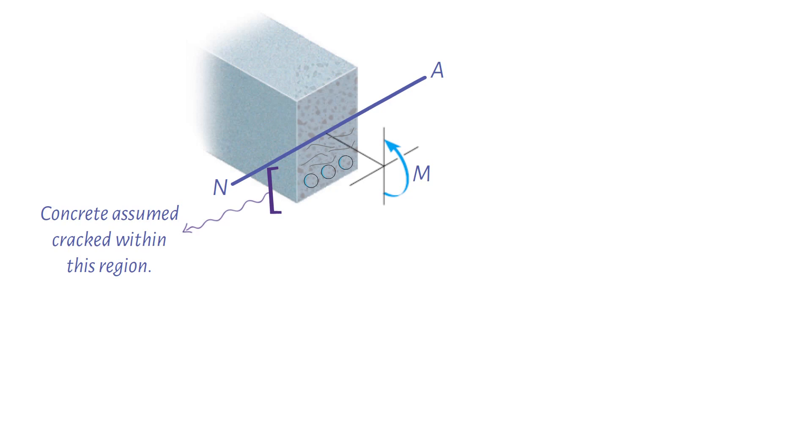As a result, the normal stress distribution acting on the cross-sectional area of a reinforced concrete beam is assumed to look like this. The stress analysis requires locating the neutral axis and determining the maximum stress in the steel and concrete.